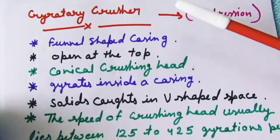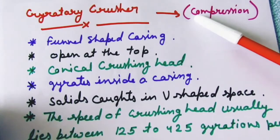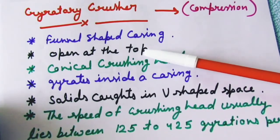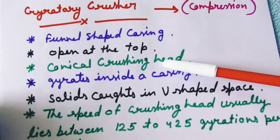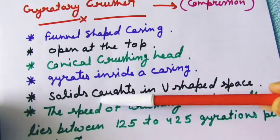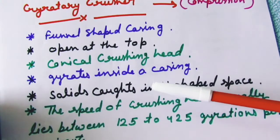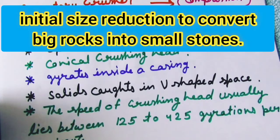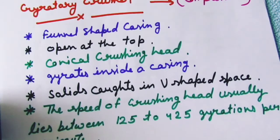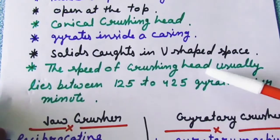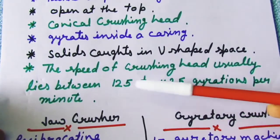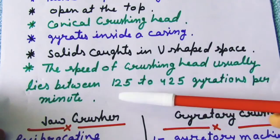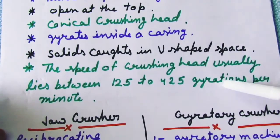So the Gyratory Crusher's important concept is gyration. The working principle is compression. The casing is funnel shape, open at the top where we put the feed. It has a conical crushing head that gyrates inside the casing. The solid is caught in the V-shape space, compressed and breaks down, then discharged from the minimum spacing. The speed of the crushing head usually lies between 125 to 425 gyrations per minute.